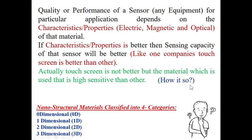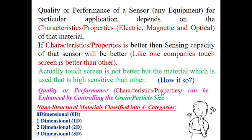The quality, performance, characteristics, and properties can be enhanced by controlling the grain or particle size. Based on the grain and particle size, the entire class of nanostructural materials is classified into four categories: zero dimensional, one dimensional (1D), two dimensional (2D), and three dimensional (3D) nanostructural materials.